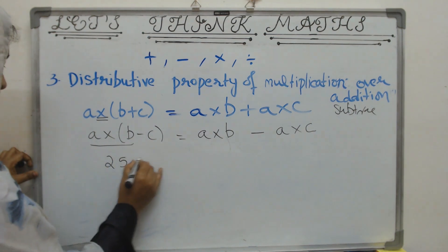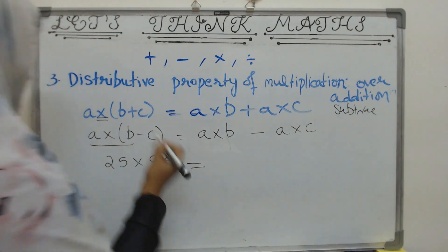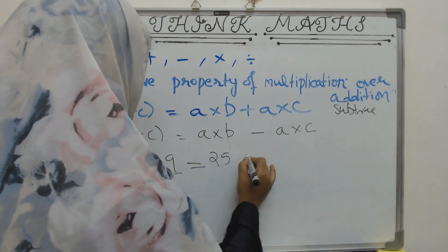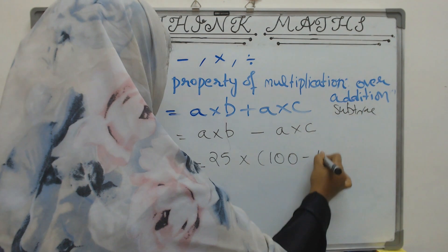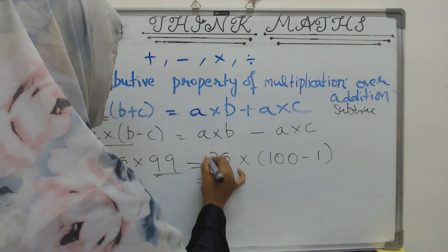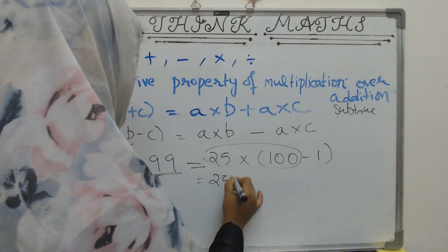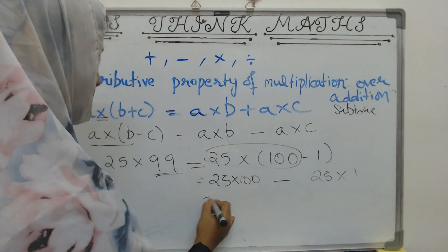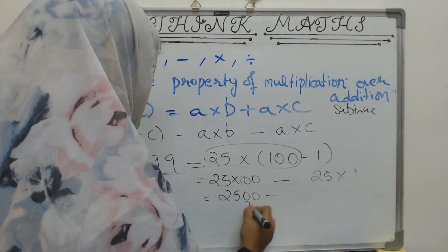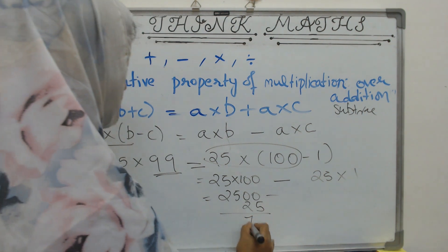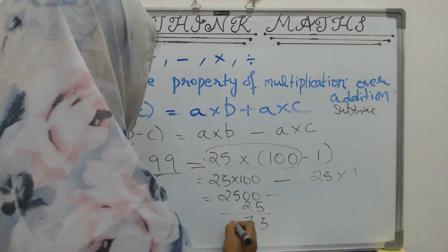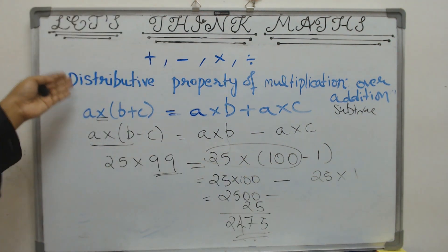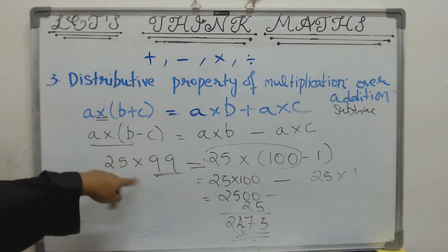Let me show you how this helps. What is 99? It is 100 minus 1. So write 25 into 99 as 25 into (100 minus 1). First, the teacher goes to the first class: 25 into 100. Then she crosses the hall and goes to the second class: 25 into 1. That would be 2500 minus 25, which equals 2475. This is how the distributive property makes these sorts of questions easy.